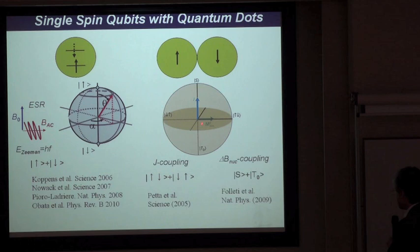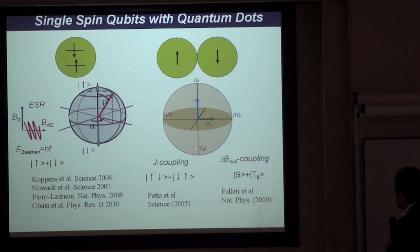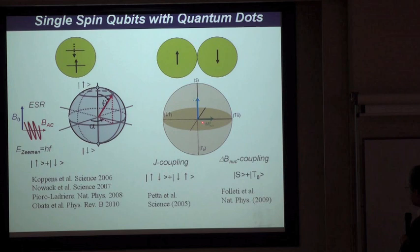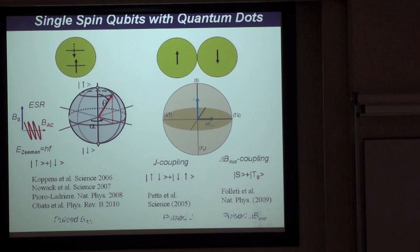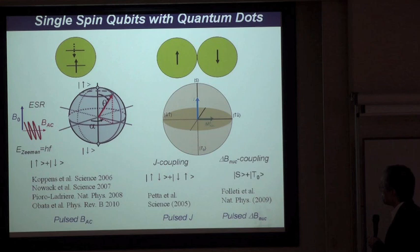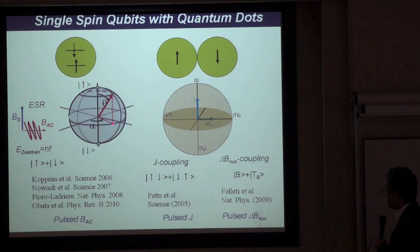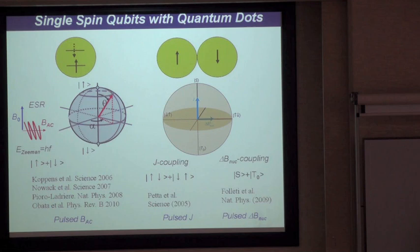A more recent approach is to use the difference in the fluctuating Zeeman nuclear field between two dots. This fluctuation along the z-axis can couple the spin singlet state and the spin triplet state with total spin zero for a double dot with one electron in each. The fluctuating nuclear field along this direction can couple these two states to form a superposition state, also demonstrated very recently by the Harvard group. The key elements are the AC magnetic field for the single-electron spin qubit, control of the exchange J, and control of the fluctuating nuclear field.